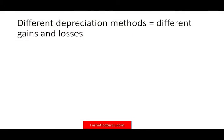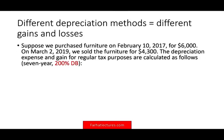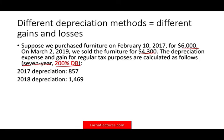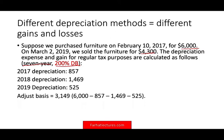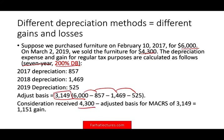If we have different depreciation methods, then when we sell an asset we'll have a different gain or loss amount. Because if you have a different adjusted basis — one for AMT and one for regular tax — you'll have differences in the gain or loss. For example: we purchased furniture on February 10, 2017 for $6,000 and sold it on March 2, 2019 for $4,300. Under MACRS 200% double declining balance (seven-year property): Year 1 depreciation $857, Year 2 $1,469, Year 3 $525. Adjusted basis is $3,149. Gain: $4,300 − $3,149 = $1,151 for MACRS.